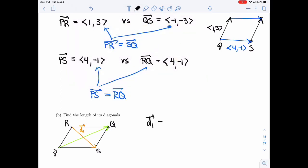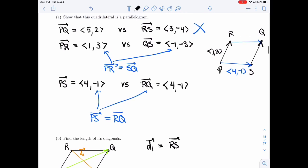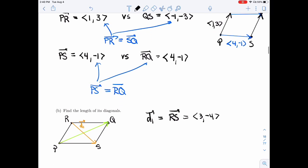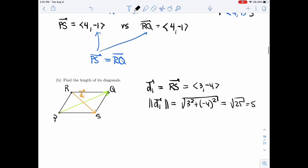So D1 is RS, and we found RS. That's <3, -4>. So the length of this diagonal is square root of 3 squared plus minus 4 squared. That's 9 plus 16, that's root of 25, and we just land on a whole number.